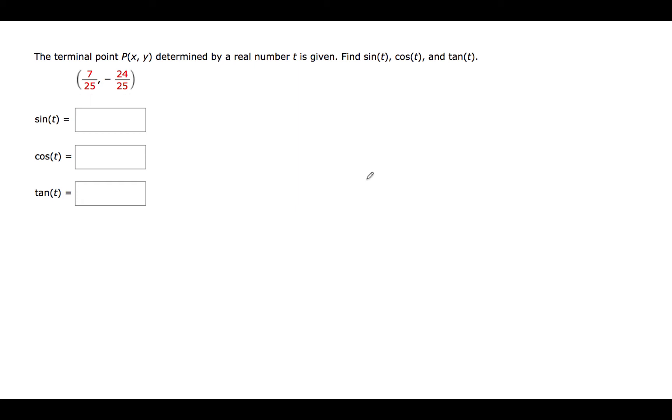The terminal point P of xy determined by a real number t is given. Find the sine of t, cosine of t, and tangent of t. And the point that we're given is 7/25, negative 24/25.